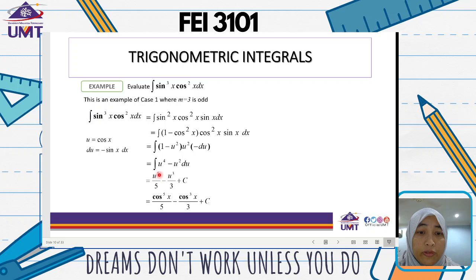Integrating term by term, you'll get u to the power of 5 over 5 minus u to the power of 3 over 3 plus C. Substituting back, you get cos to the power of 5 x over 5 minus cos cubed x over 3 plus C. Looking at the example, it's actually quite straightforward. I think you'll get the concept.